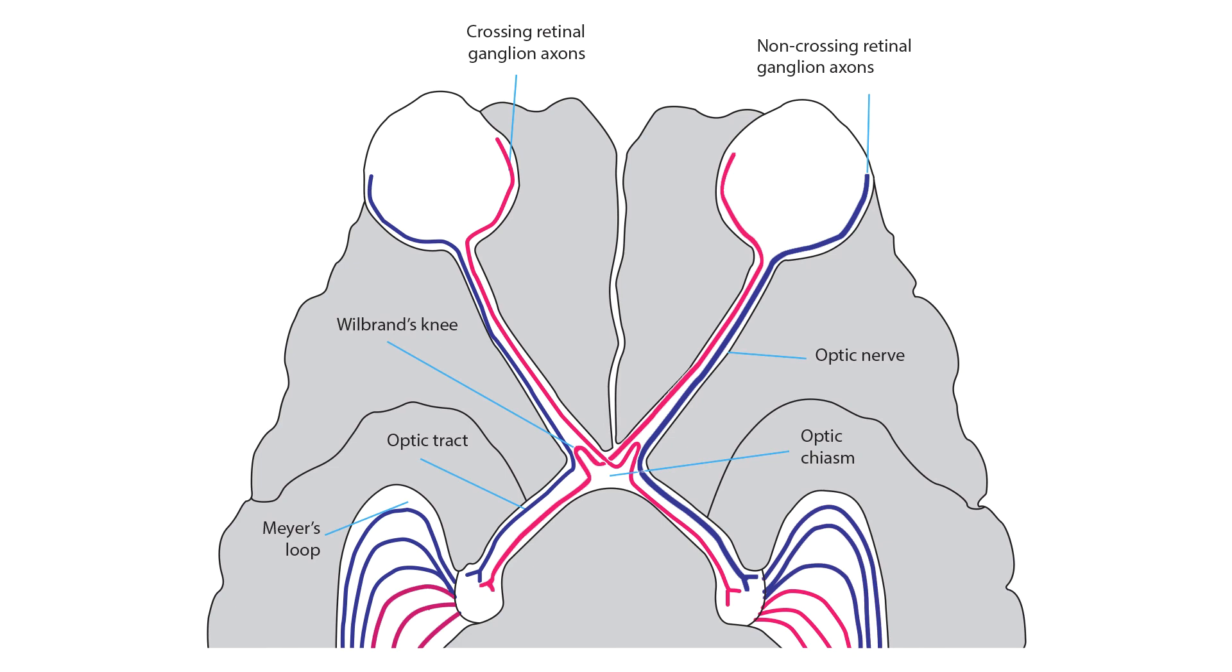Within the optic nerve, the nerve fiber bundles maintain their positions until they approach the optic chiasm. At that point, axons that originated from nasal and temporal retina begin to separate. Axons that started in nasal retina cross in the optic chiasm to the contralateral optic tract. Those axons that started in the temporal retina do not cross and continue into the ipsilateral optic tract.